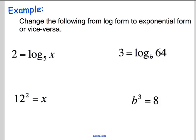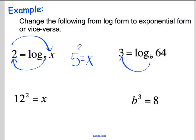Let's look at an example of switching between the two. The first one is 2 equals log base 5 of x — I just want to switch this to exponential form. The base of my exponential is 5, so we'll say 5 squared equals x, or 5 to the 2 equals x. That's the way we switch the form. For the next one, hopefully you decided b to the 3 equals 64.